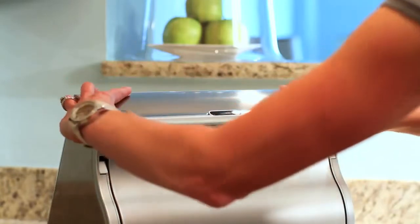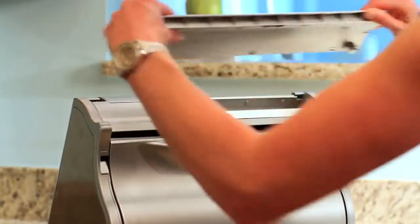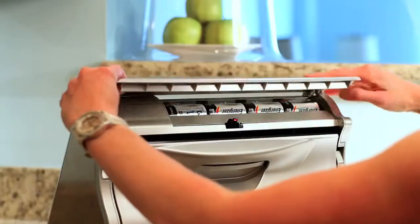If you're going to run your dispenser on batteries, now is a good time to install them. The unit takes four D batteries. Remove the faceplate by pulling it down, insert the batteries with all positive ends facing left, and then replace the faceplate.